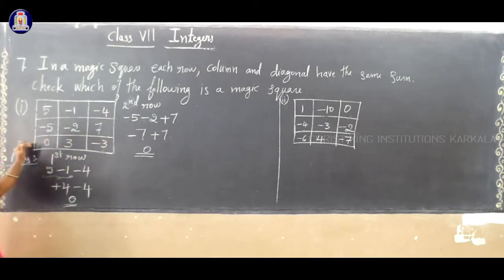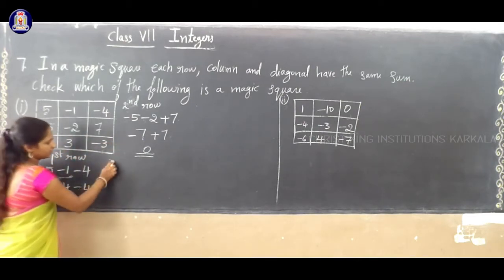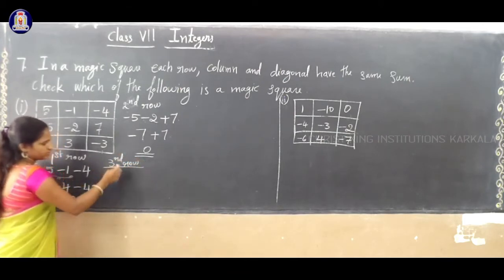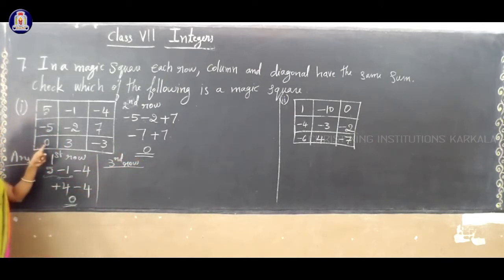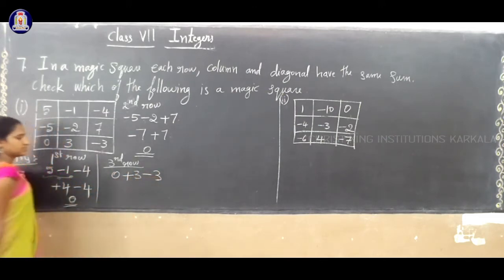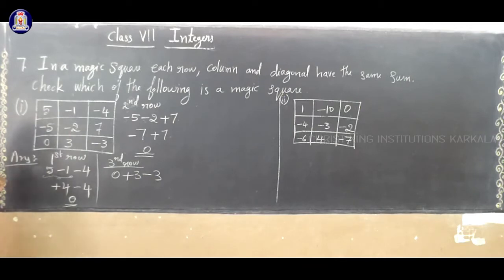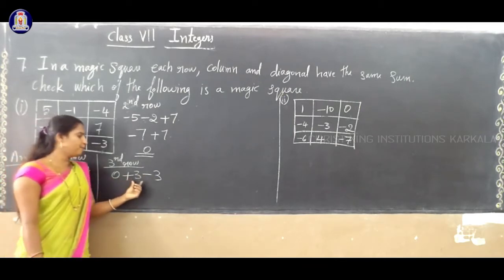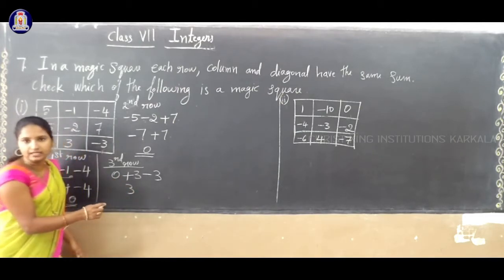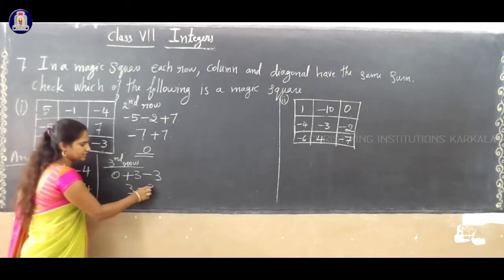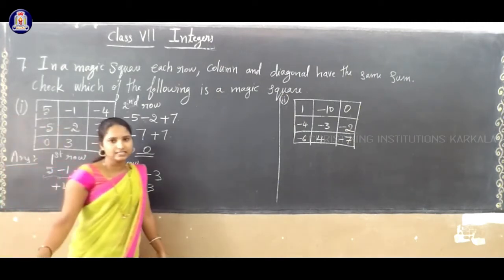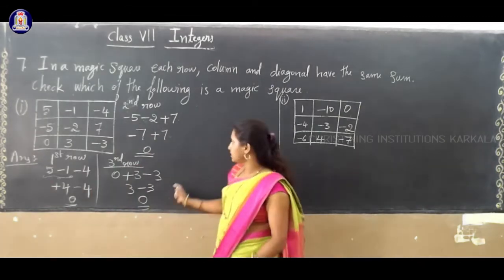Last row, that is the third row: the numbers are 0, plus 3, minus 3. 0 plus 3 is 3, then 3 minus 3 is 0. So, the third row sum is 0.